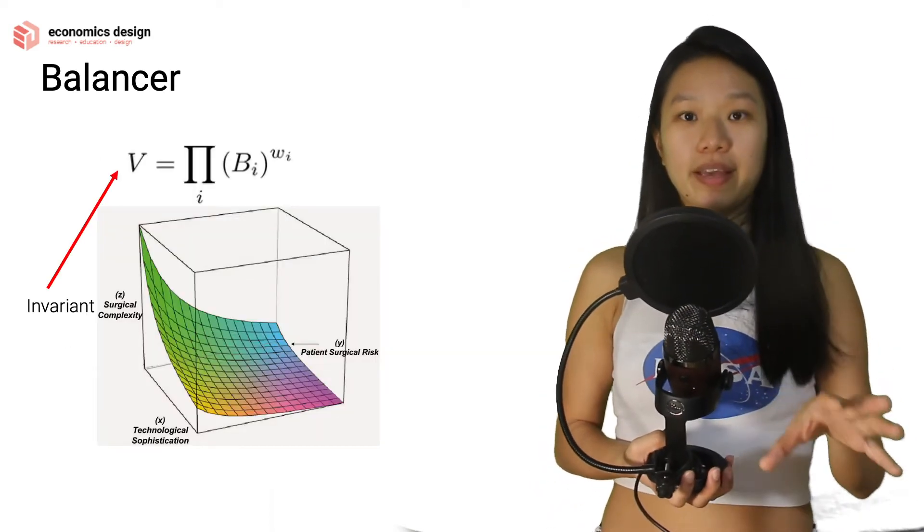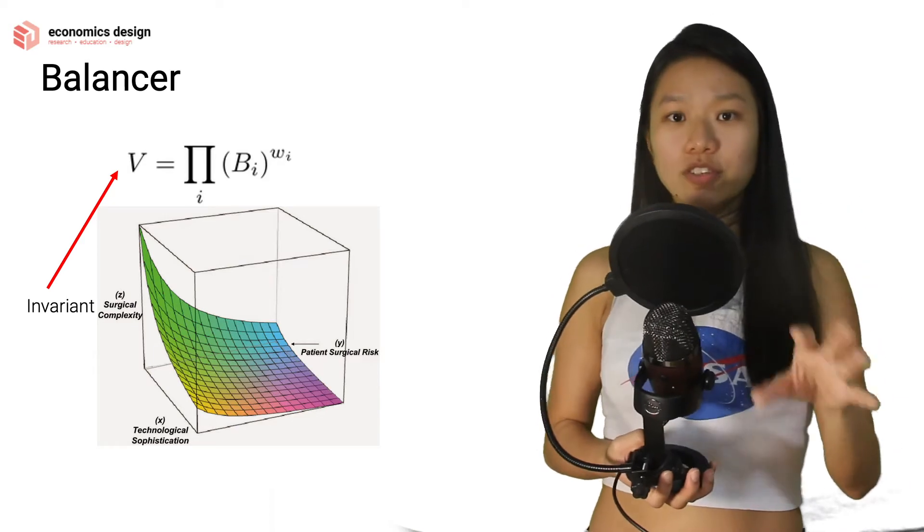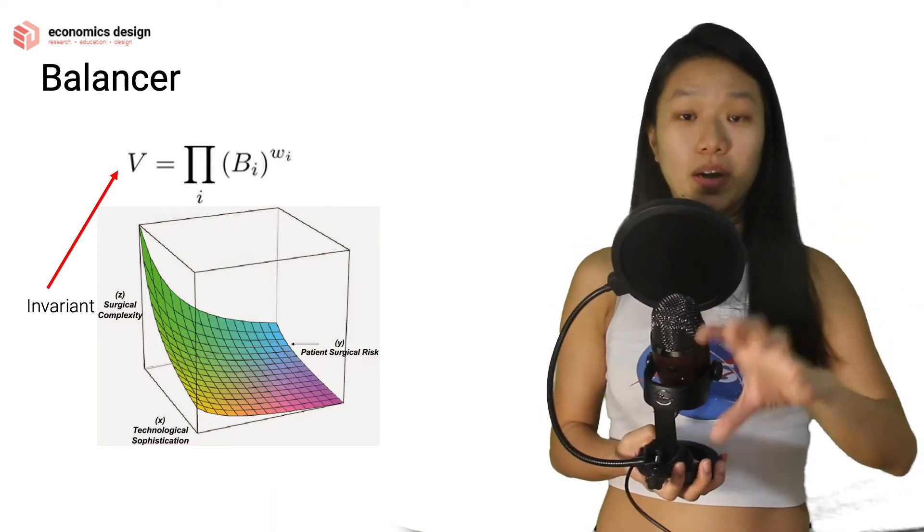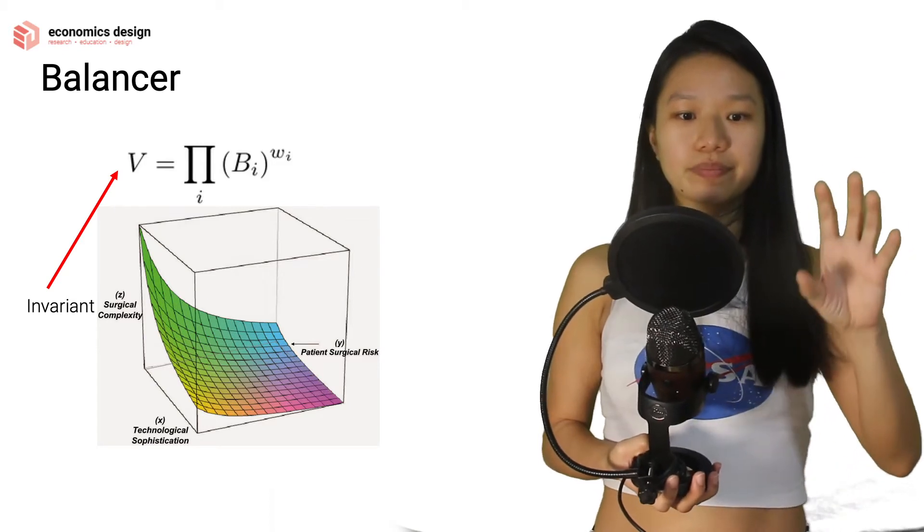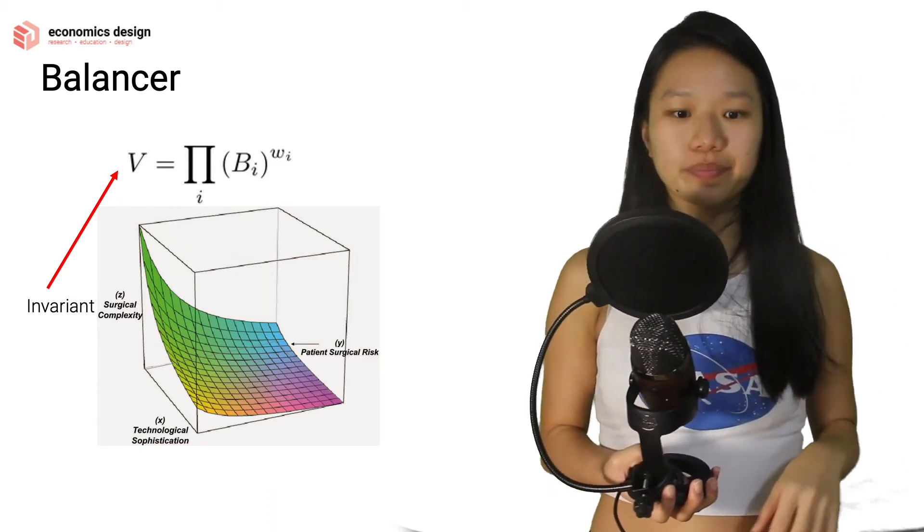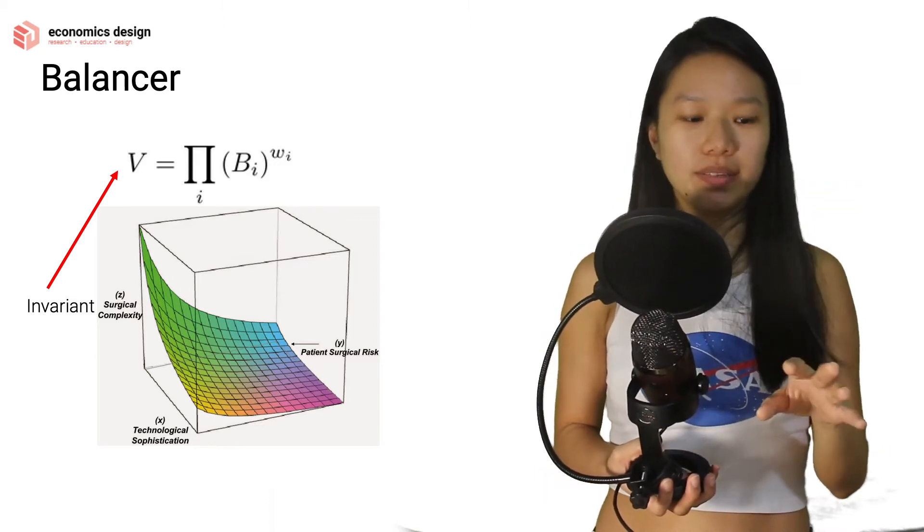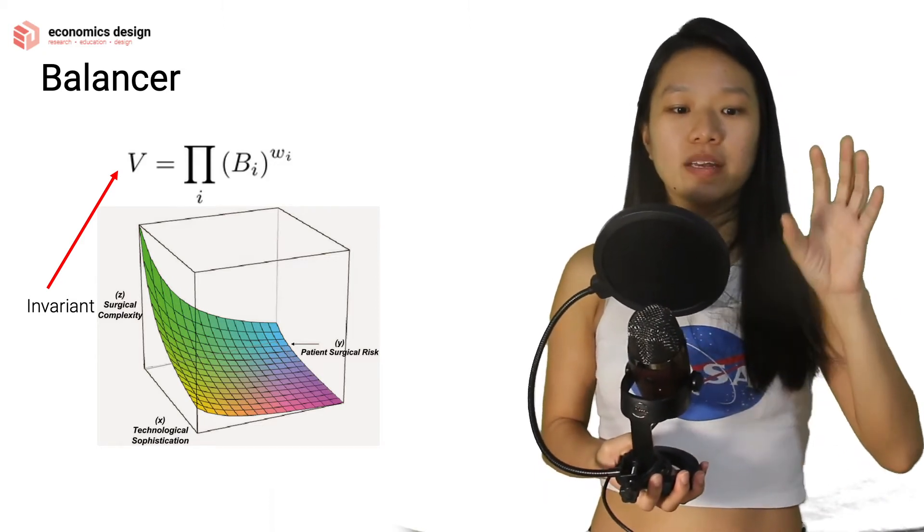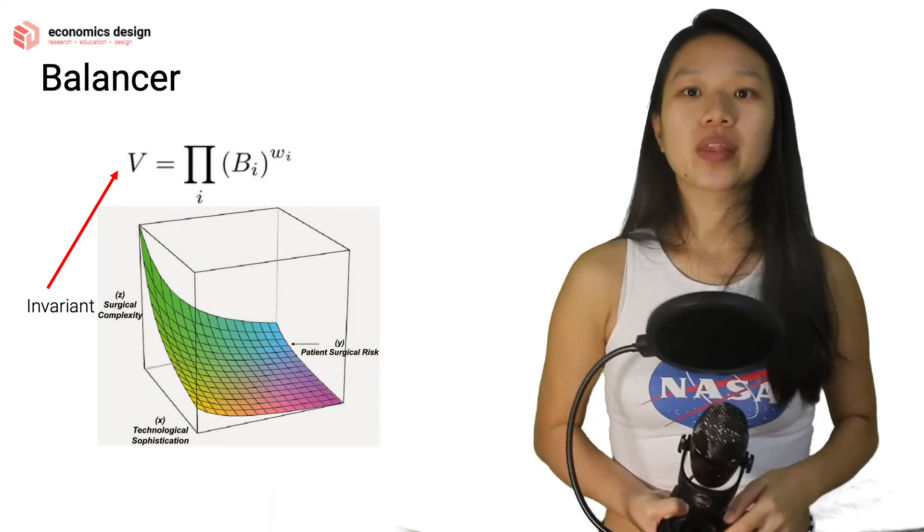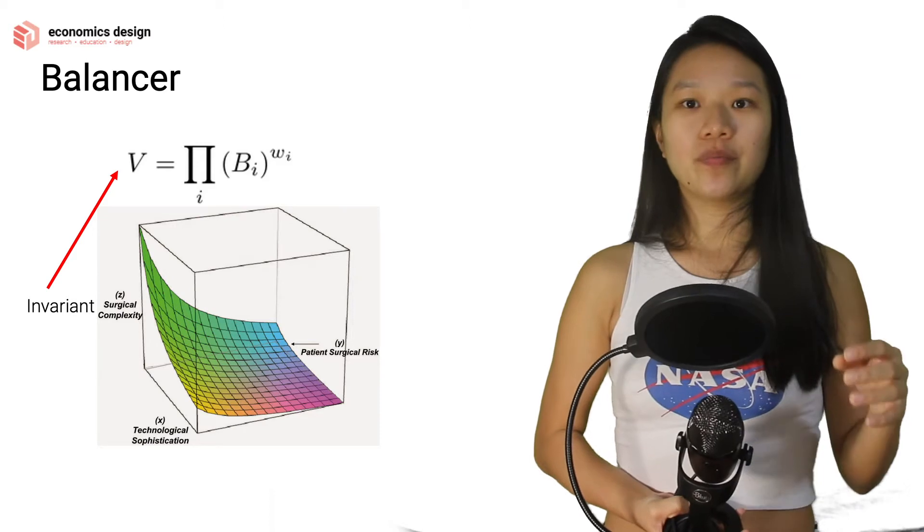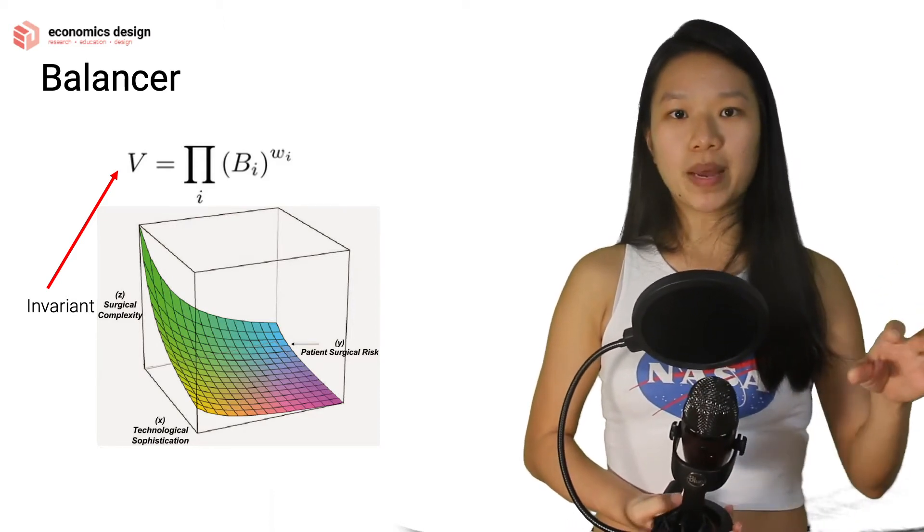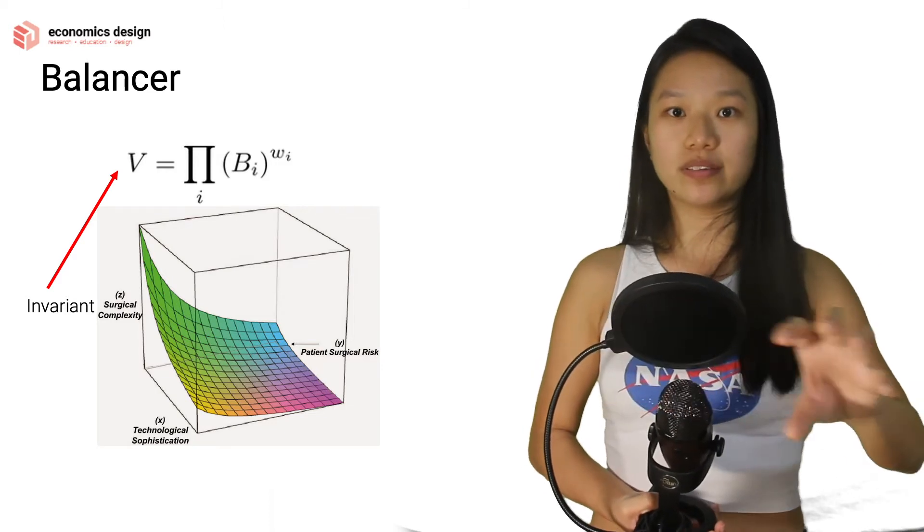So this is what the math is. It looks complicated, but it really is not. It's a sum of amount of tokens - the sum of the tokens multiplied by the weight you give. Just understand that there is this thing called the invariant, which is the V that you see over there. The invariant balances the sum of all the tokens available.